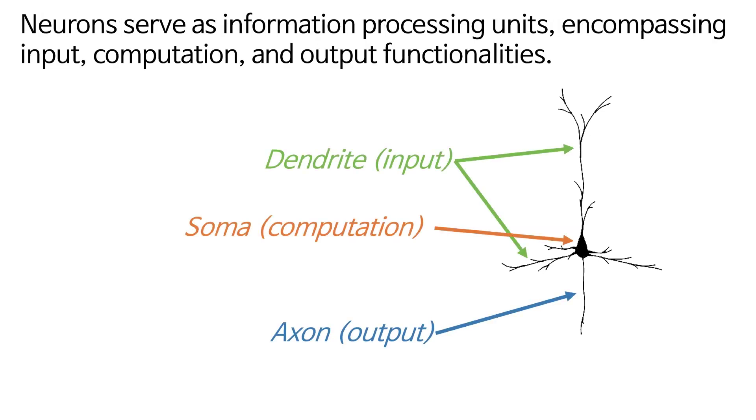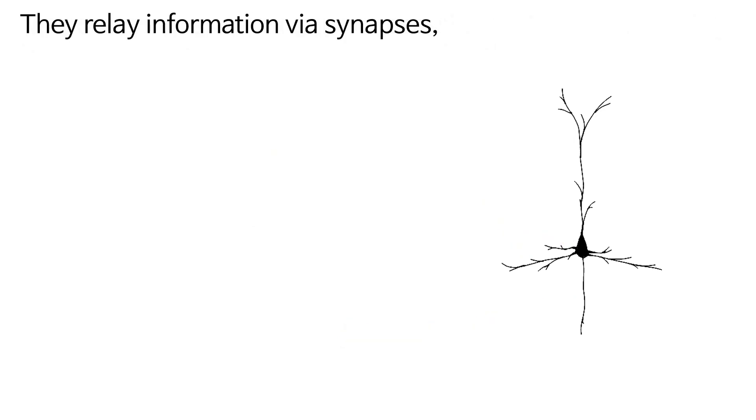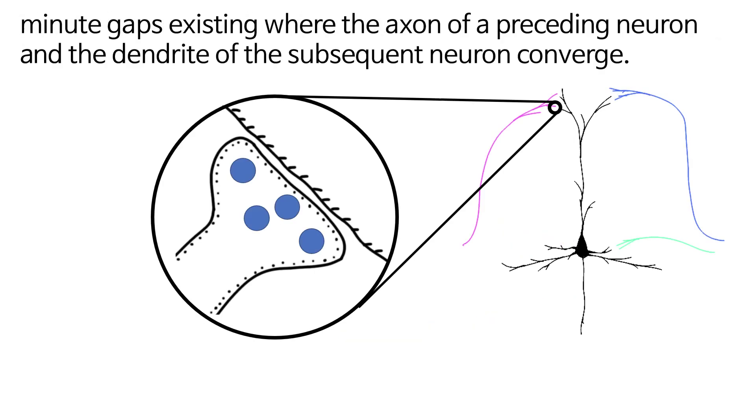Neurons serve as information processing units, encompassing input, computation, and output functionalities. They relay information via synapses, minute gaps existing where the axon of a preceding neuron and the dendrite of the subsequent neuron converge.